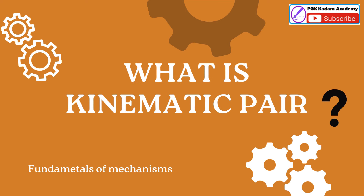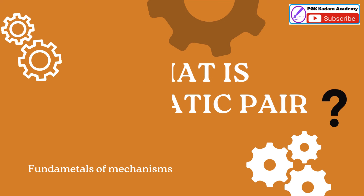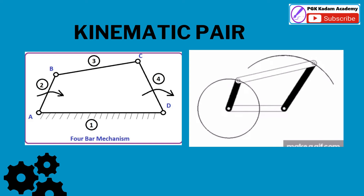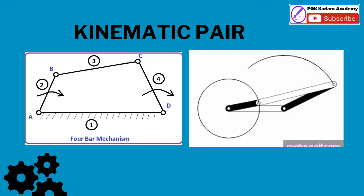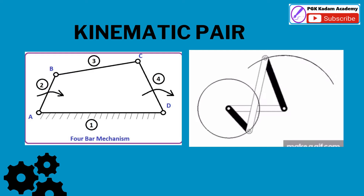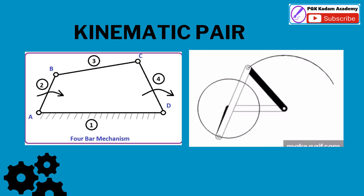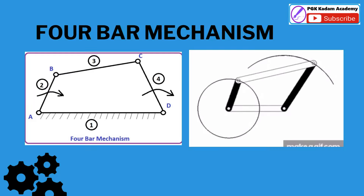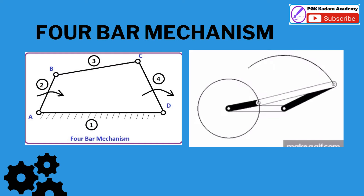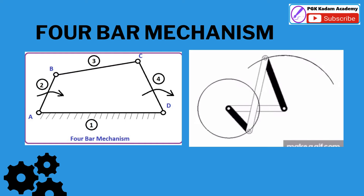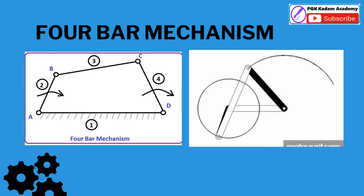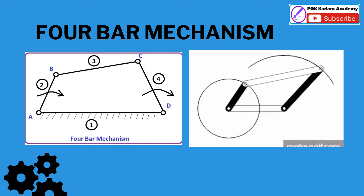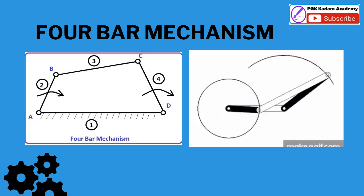What is a Kinematic Pair? When two links or bodies are connected in such a way that there is a relative motion of one link with respect to the other link, then it is called a Kinematic Pair.